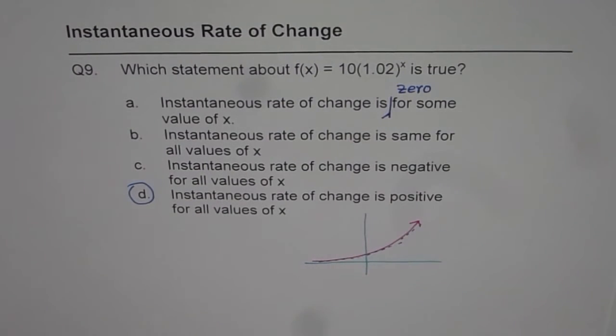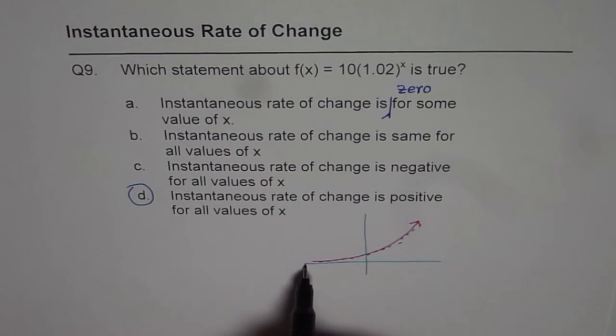So therefore option d is the right option. You should know it is never 0. It approaches 0 as x is approaching minus infinity. So it is always increasing. That's the right answer. Thank you and all the best.